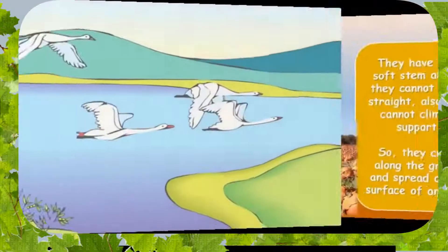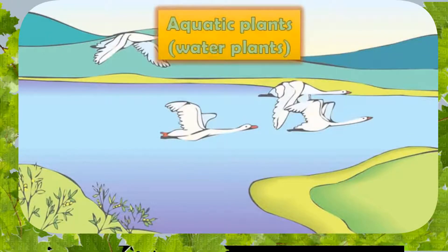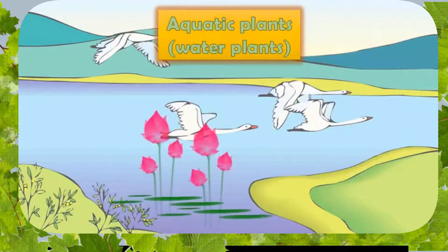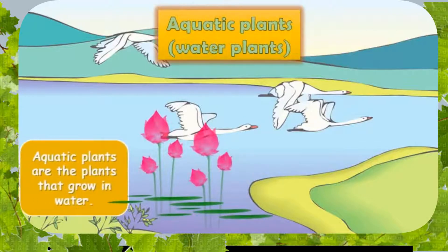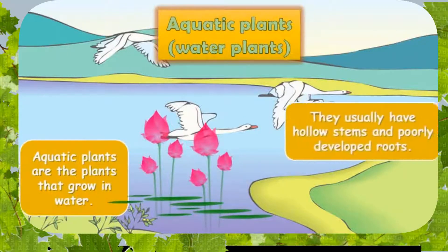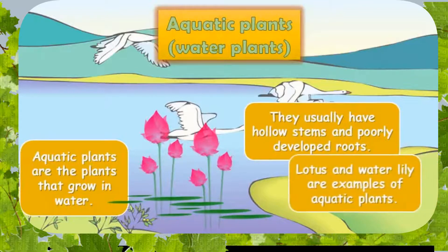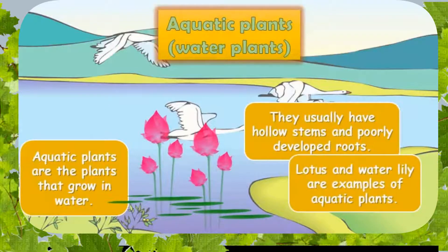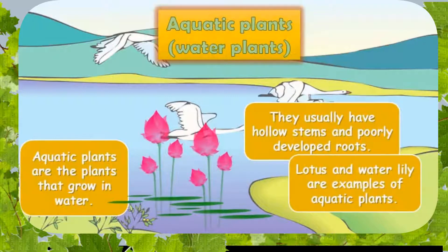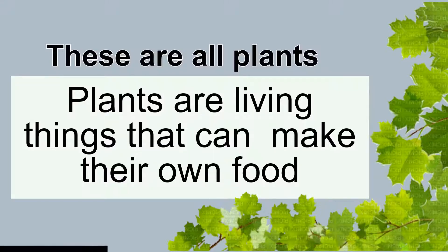Aquatic plants are plants that grow inside water. An example of an aquatic plant is the water lily. Water lily plants grow inside the water.